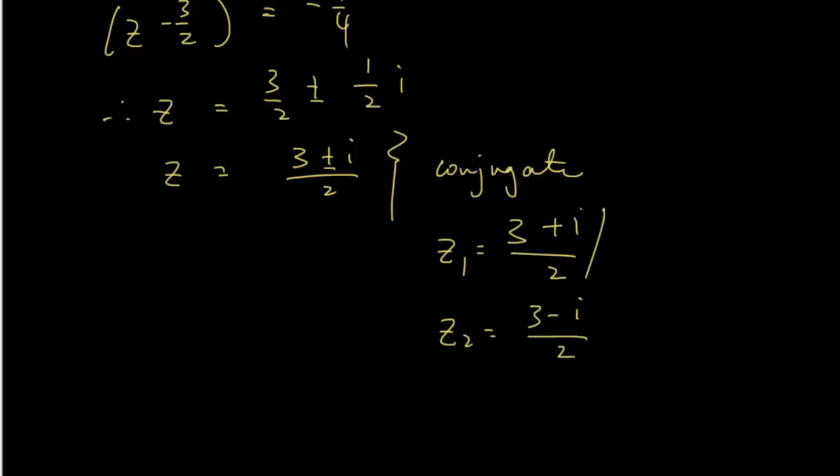Or you can express it this way: 3 over 2 plus i over 2, or for this one, there's 3 over 2 minus i over 2.